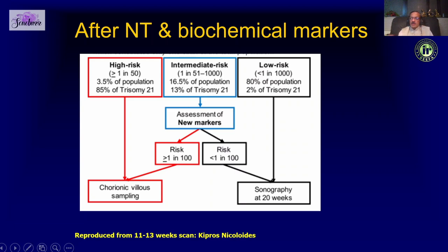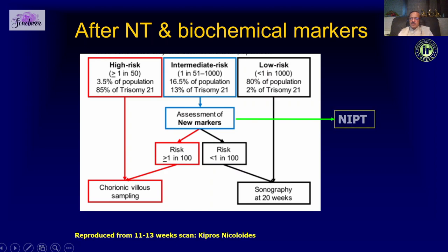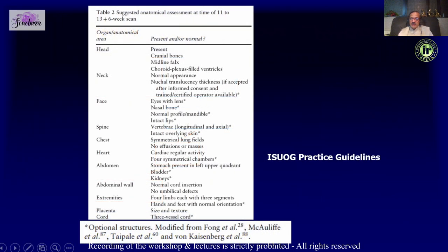If the risk is intermediate — between 1 in 100 and 1 in 1000 — you now have the option of doing NIPT. This is a good subset of patients with intermediate risk where you are not sure whether to do an invasive test but don't want to take any chances. This is the group where you can subject them to NIPT.